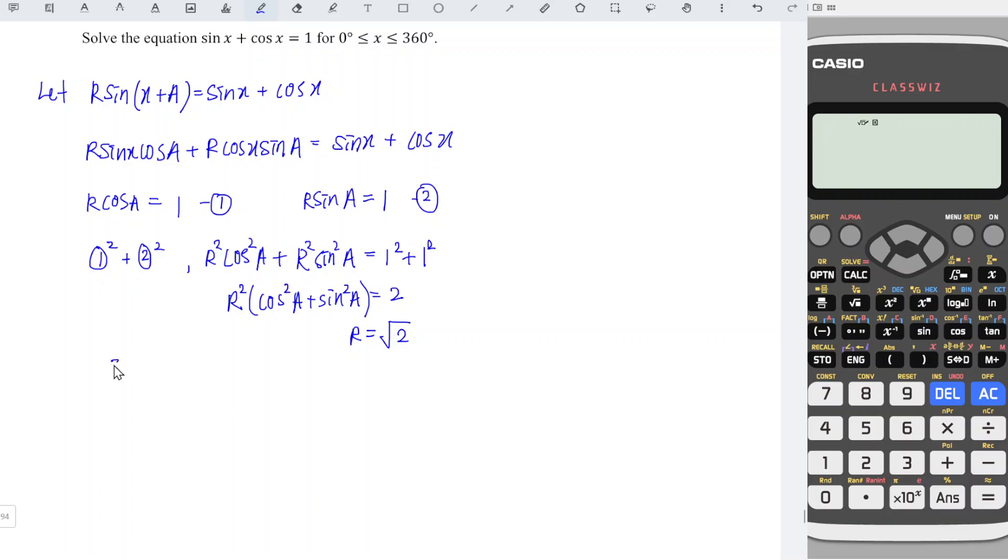Now take the second equation over the first equation: R sin a / R cos a = 1/1. The Rs cancel, sin over cos is tangent a, so tan a = 1, which means a = arctan(1) = 45 degrees.